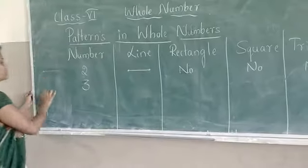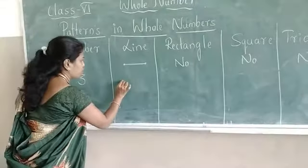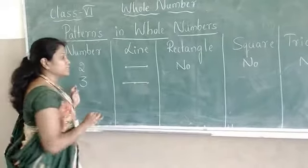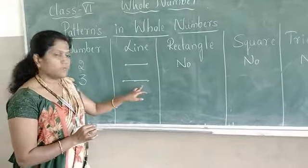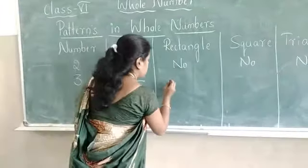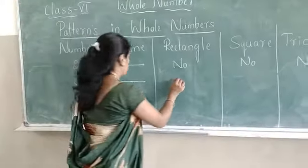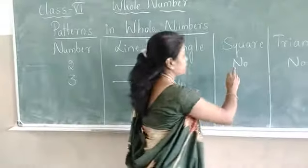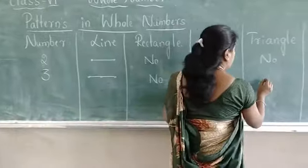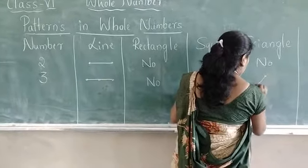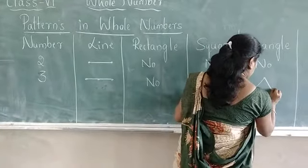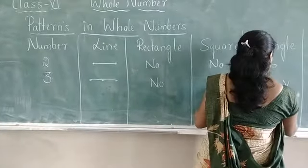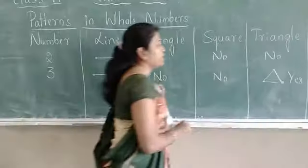Next: 3. There are 3 dots: 1, 2, 3. Elementary shapes — line? Yes. Rectangle? No, only 3 dots are there. Square? No. Triangle? Yes! 1, 2, 3 — yes, right.